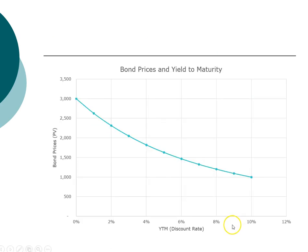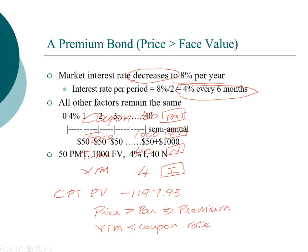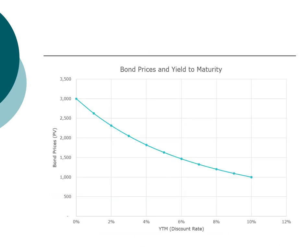Another important principle demonstrated in our examples is the inverse relationship between interest rates and bond prices: as interest rates increase, bond prices decrease. The yield to maturity and bond prices move in opposite directions. Now that you've mastered bond price calculations and understand the relationship between bond prices and yield to maturity, we'll look at how to compute other variables associated with bond valuation.